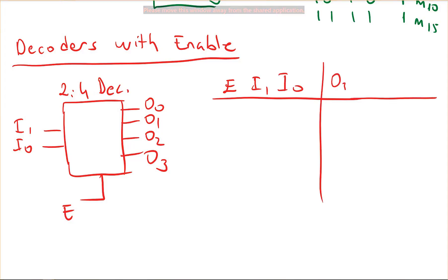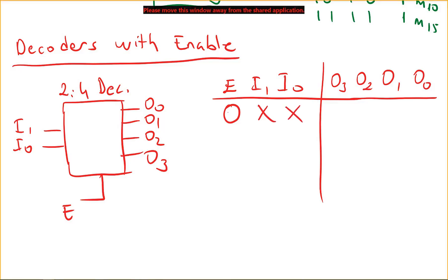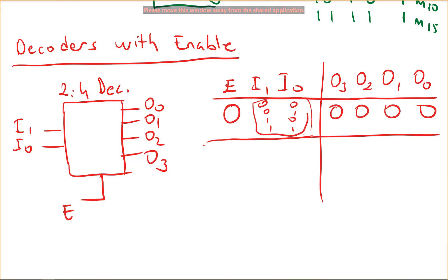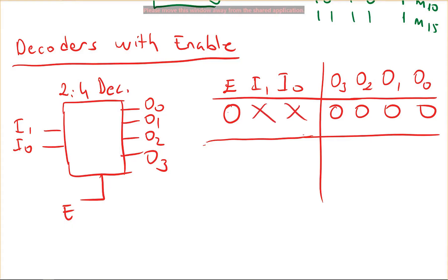If the enable is zero, we don't care what the inputs are — all outputs will be zero. This is not a don't-care case for the output; it means all outputs are forced to zero regardless of inputs. Rather than writing four separate lines for every input combination, we write one line with don't-care on the inputs since the outputs don't depend on them when enable is zero.